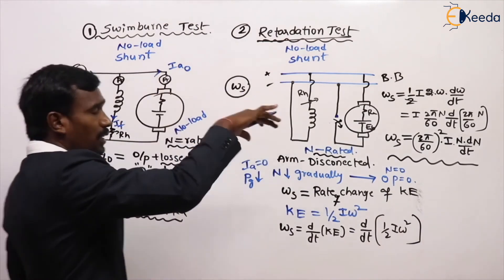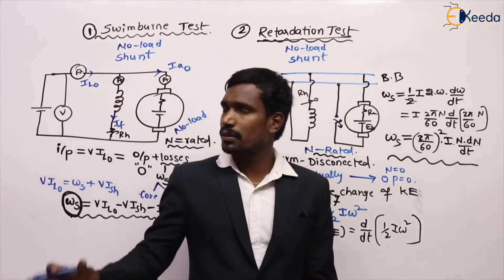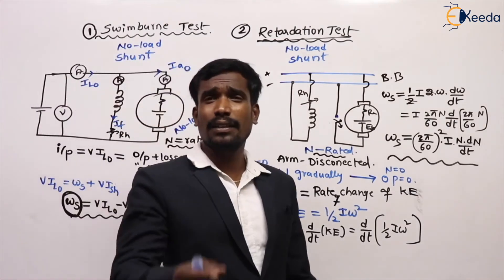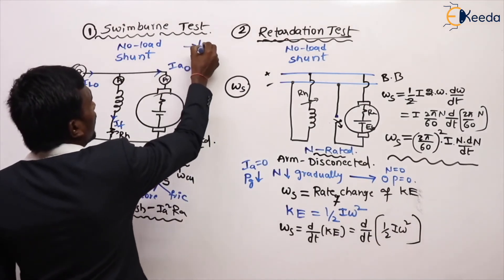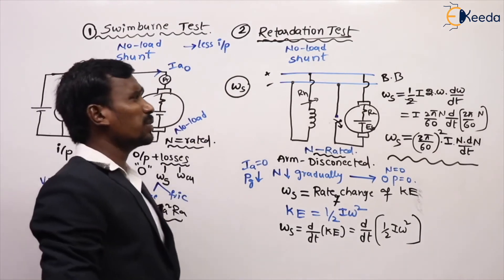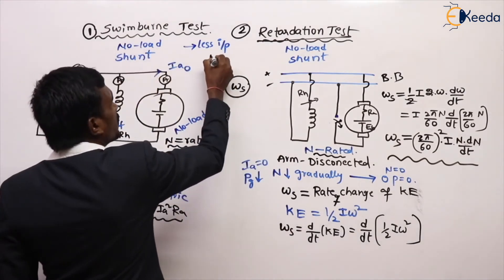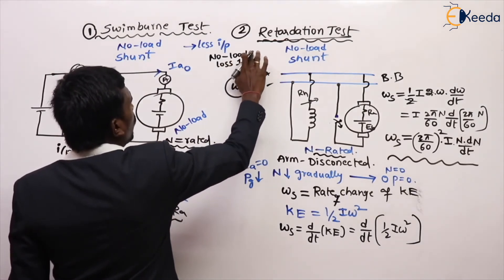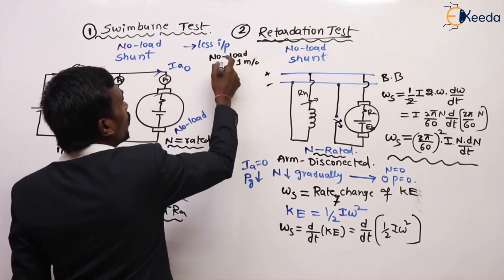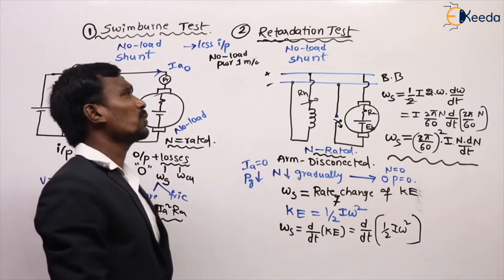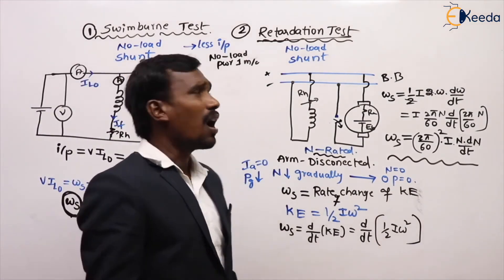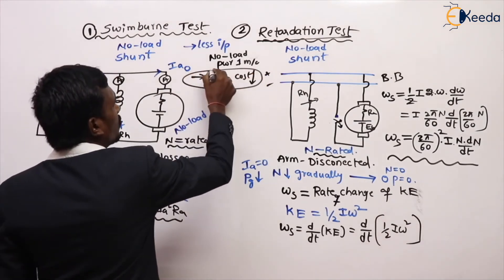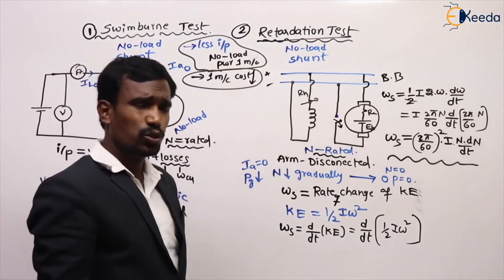This is the aim of the no-load test. Now, what are the advantages? These two tests can be completed in less time, and they require less input power — just the no-load loss of one machine. Only one machine's no-load power is needed as input. This is very simple and requires very little input. And since we use only one machine, the cost is also very less. Two advantages: less time and less cost.